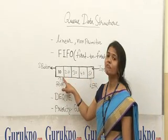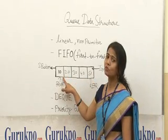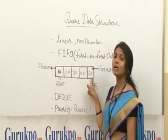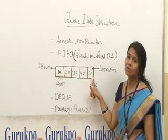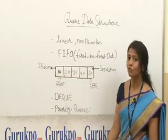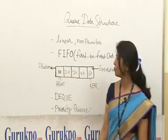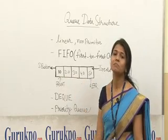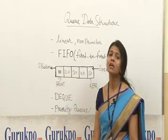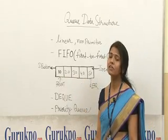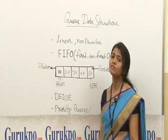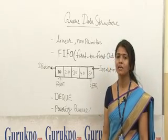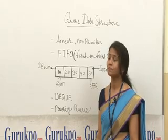10 will be the first element to get removed from the queue and 50 will be the last element to get removed from the queue. It is a FIFO structure. FIFO means first in first out, in which the first inserted item will be the first to get removed from the queue.